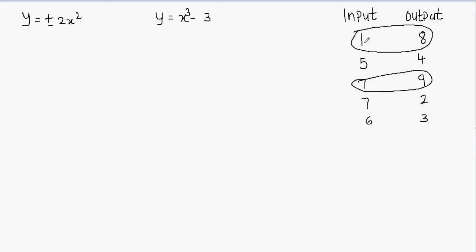When I plug in x equals 1 one time it gives me 8, the next time it gives me 9, maybe the next time it might give me 10. So this is not a function since one single input is generating two different outputs.